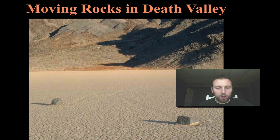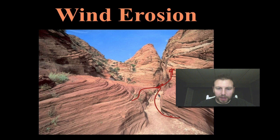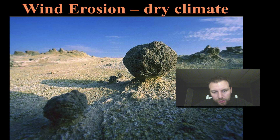Moving rocks in Death Valley are slowly crept along by wind. As wind came around these corners and moved through, very fine particles help break down the surface over time. Notice the dry climate we see this in. Some areas show a little bit more resistant material, which keeps that feature standing while everything else around it breaks down.